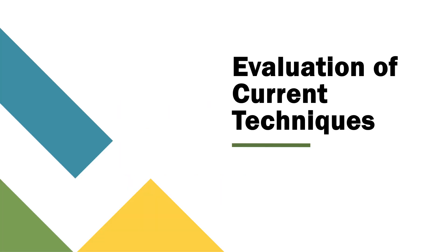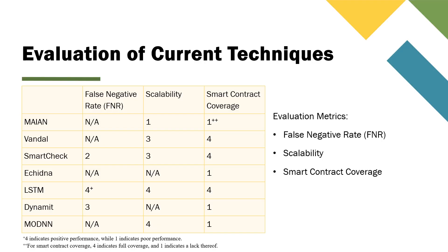Now let's look at an evaluation of current techniques. For the current techniques, we have three different evaluation metrics. The first and most important is the false negative rate. A false negative occurs when a smart contract vulnerability does occur, but the analysis tool is unable to detect it. Because smart contracts deployed on the blockchain are immutable, we find it very important to minimize the number of vulnerabilities that are overlooked because these can't be remedied after a contract is deployed. In this category, some of the original creators of the comparable tools do not report a false negative rate, so we don't score them. For all of the rest, a score of one would indicate a very high rate of false negatives, whereas a score of four indicates a very low rate of false negatives, which is ideal.